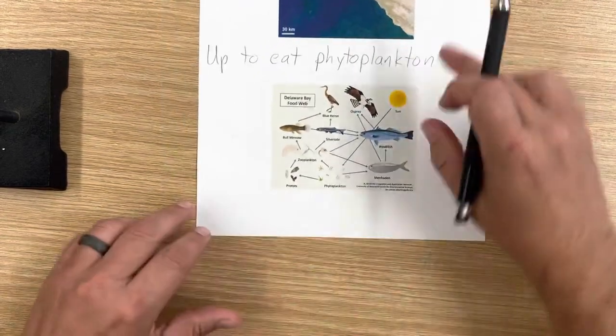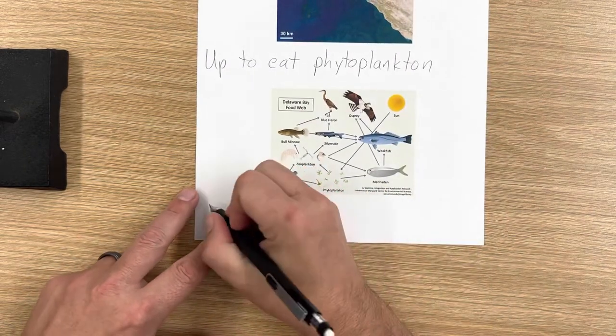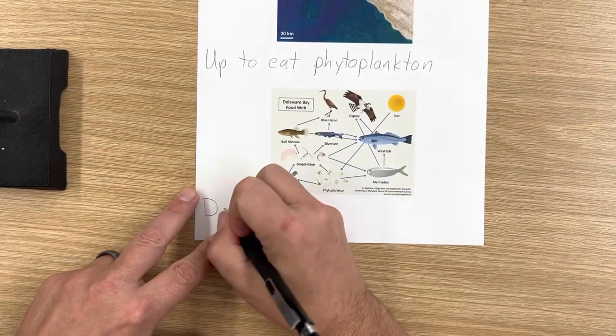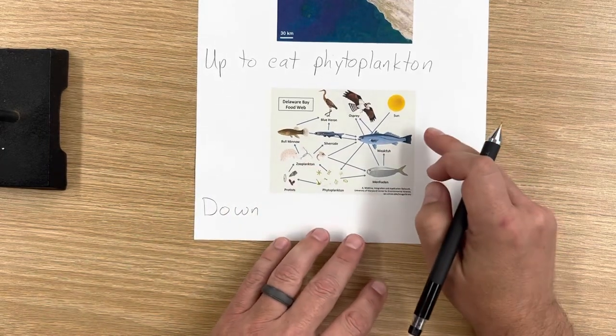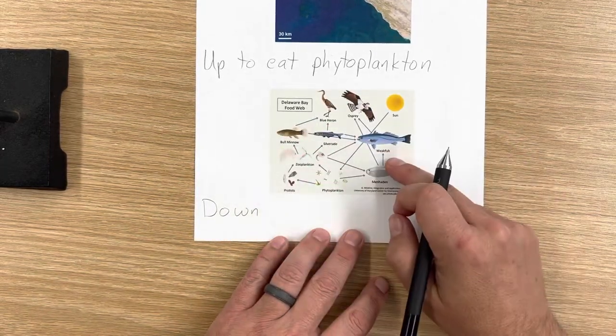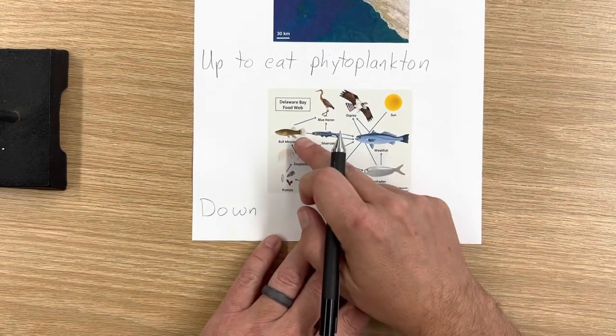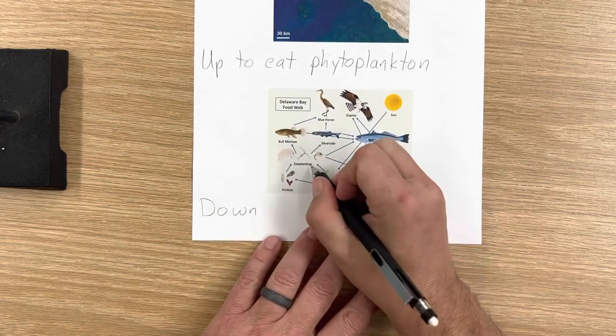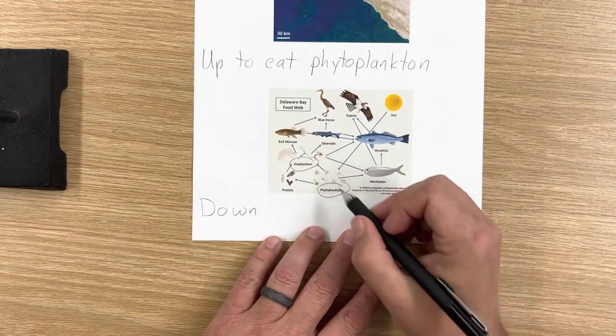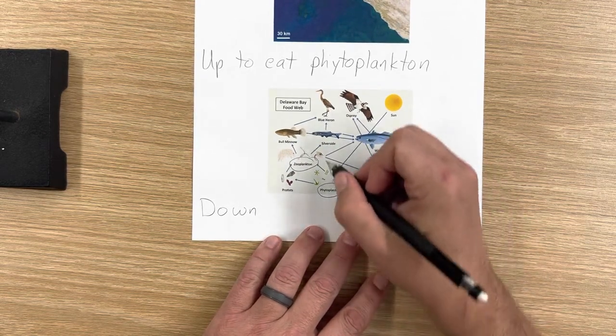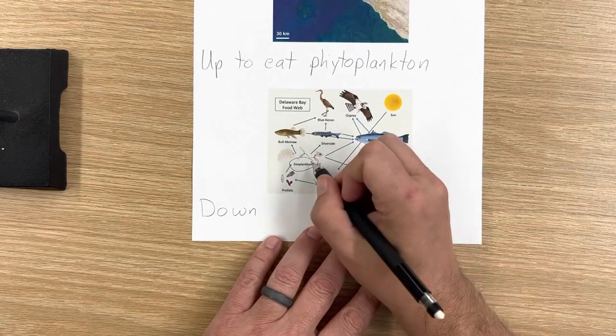Why do they go down? Well, they're going to go down to avoid predators. If you look at this food web, you see zooplankton here, phytoplankton down here. And the arrows point to what eats them. So phytoplankton get eaten by zooplankton.